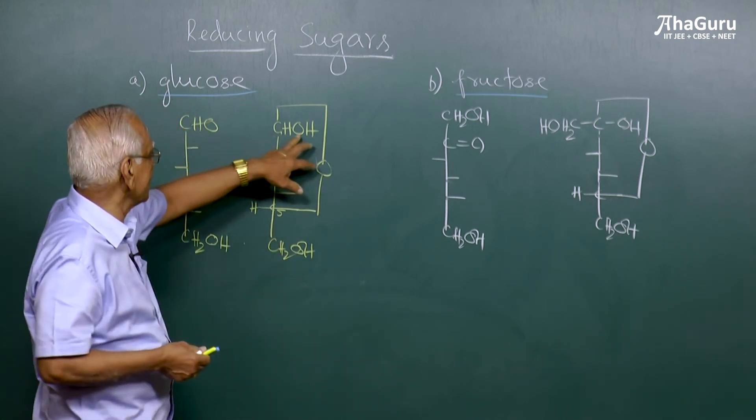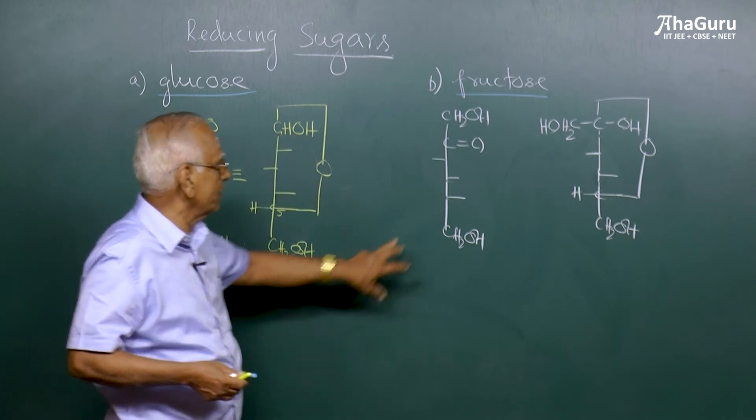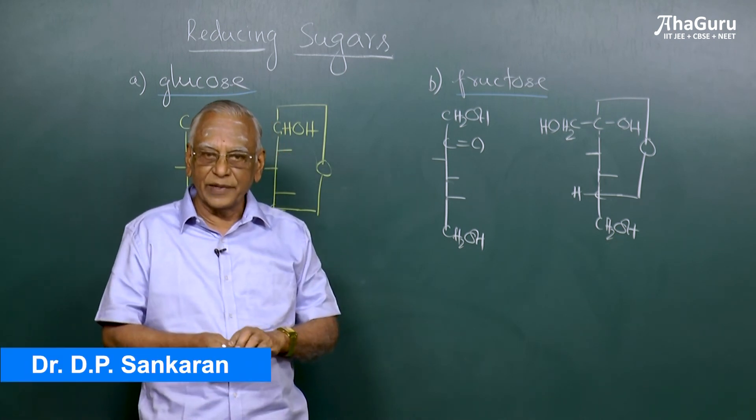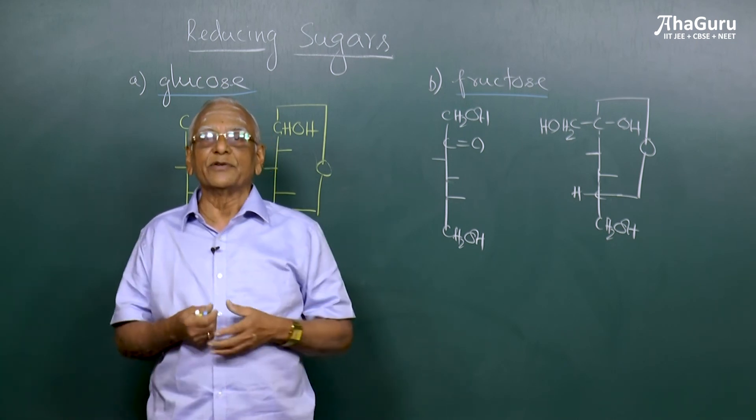Look at that. This has got the free OH group. We are not concerned about the other carbon atoms. You should take only the anomeric carbon atom. So in terms of the structure, if the anomeric carbon atom has a free OH group, it is identified as a reducing sugar.